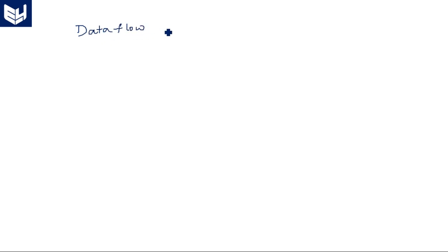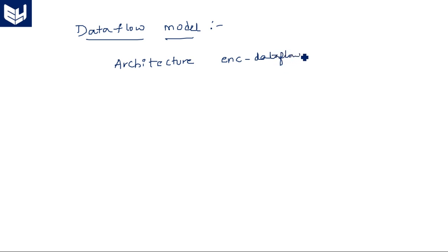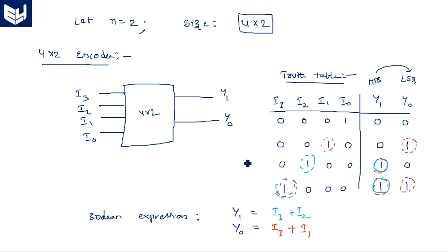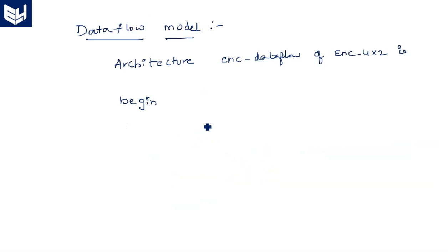First, data flow model. Architecture encoder_dataflow of encoder_4by2 is begin. If any signal is required, we can write it here before begin. We can take conditional statements or directly write the output equations. As mentioned in the last video, the output equations are: Y1 = I3 OR I2, and Y0 = I3 OR I1.